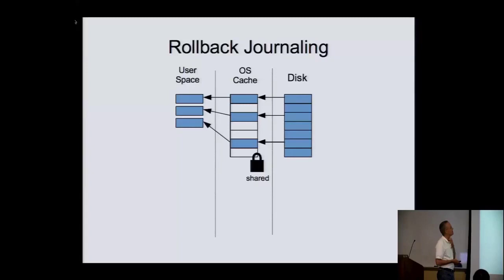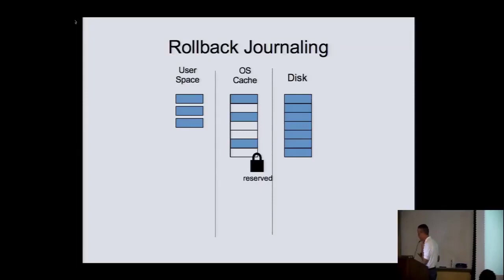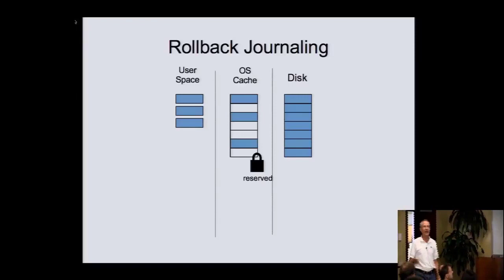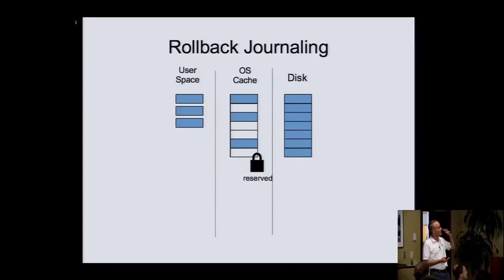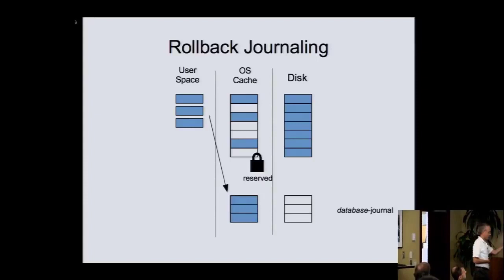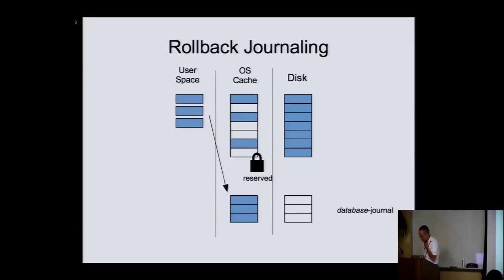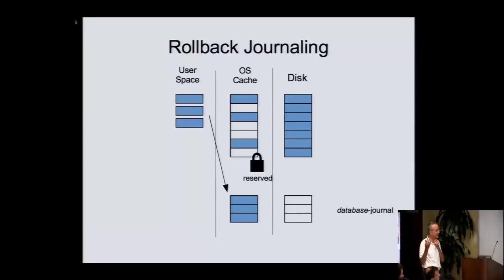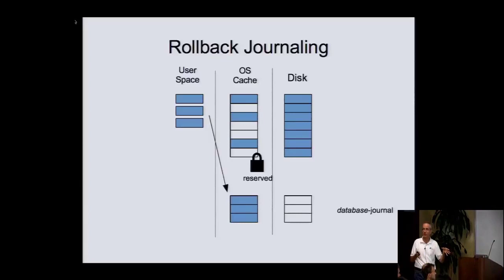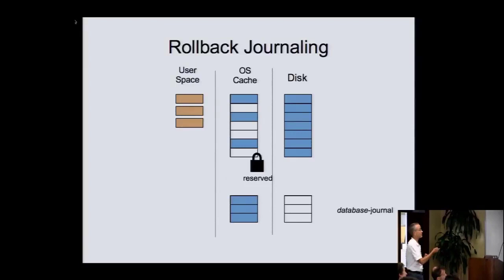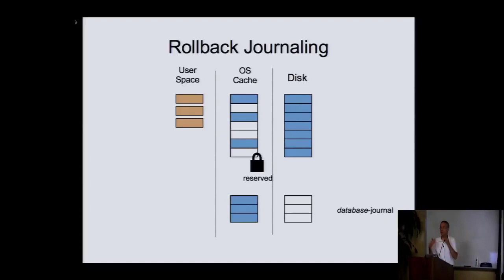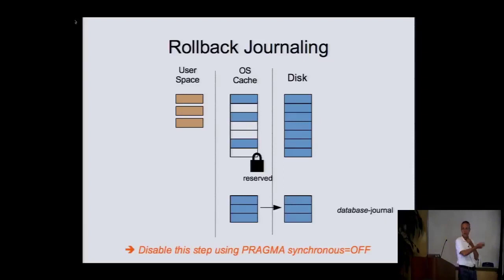Suppose you want to make some changes — insert some data. The first thing it does is get a reserve lock on the database file, saying it's getting ready to write. Only one writer at a time — it calls dibs. Other people can continue to read; it's not writing yet. Then it stores the original unchanged content of the database pages it's going to change in a rollback journal — a file in the same directory as the original database with dash-journal appended. After that, it's free to make changes to the individual pages in user space. Nobody else can see this yet.